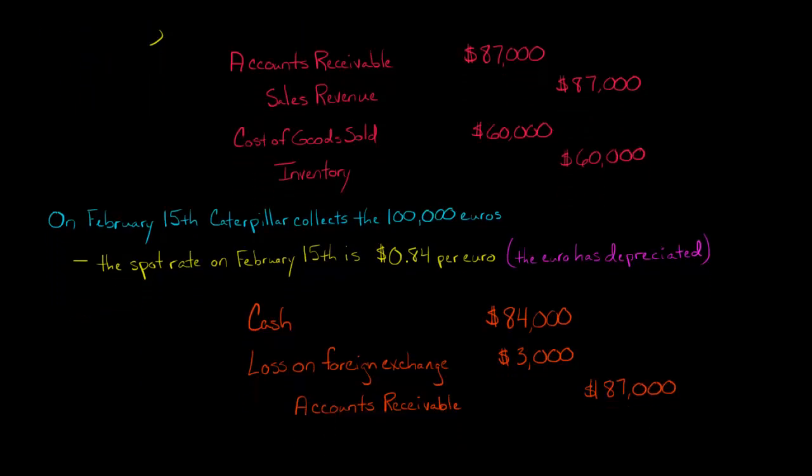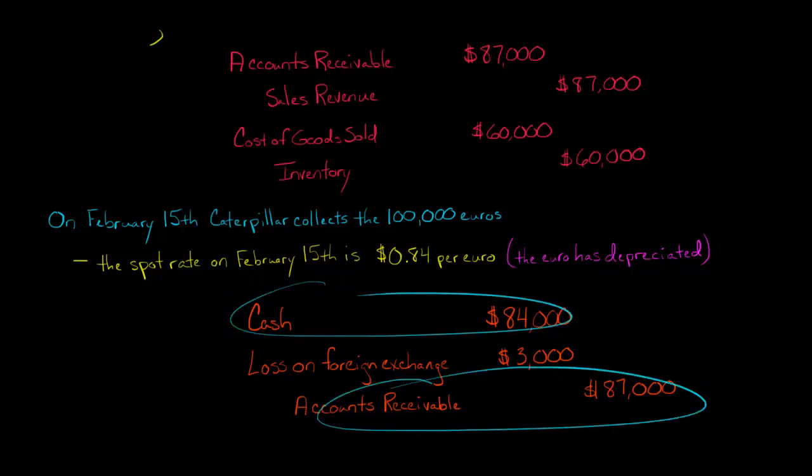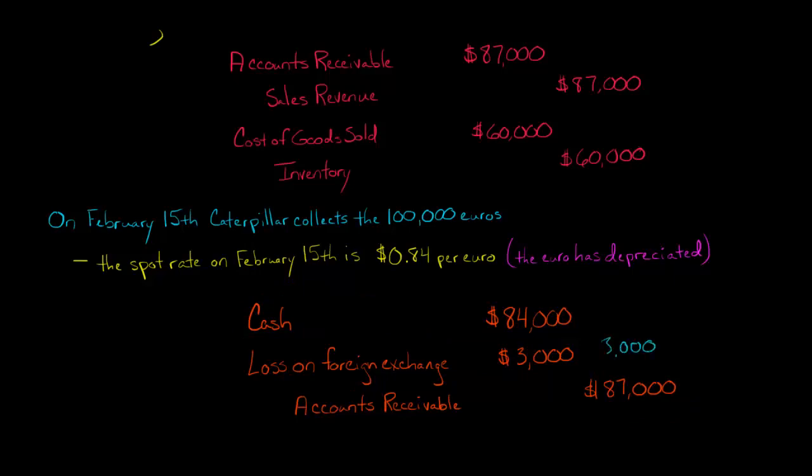Then in that scenario, we would say, okay, we're actually receiving more cash than the receivable that we're taking off the books. We'd be debiting cash for $90,000 and crediting receivable for $87,000. And then in that hypothetical scenario, we'd need a credit of $3,000, and we would call that a gain on foreign exchange.